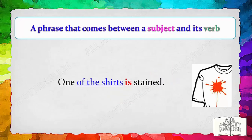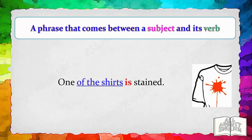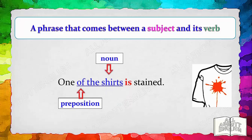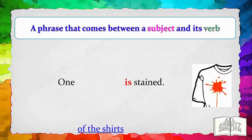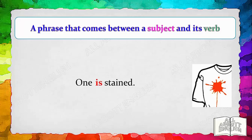On the other hand, a phrase doesn't express a complete idea. There is no subject within the phrase; in addition, it has no verb, but a preposition and a noun. So it doesn't really make sense by itself — hence it cannot stand on its own. Similarly, by mentally removing the phrase, it is easier to match the subject with its verb. 'One' is a singular subject, so it takes a singular verb, 'is.'